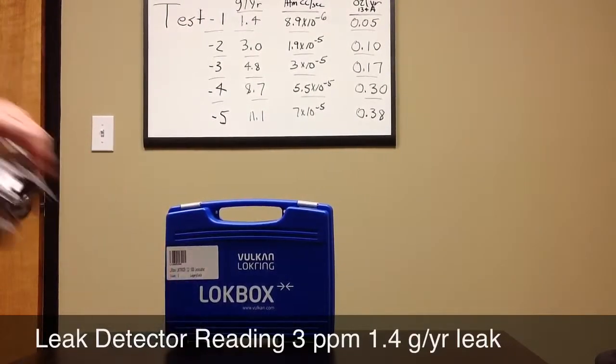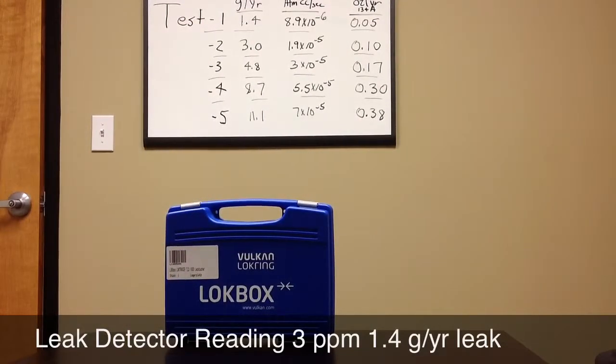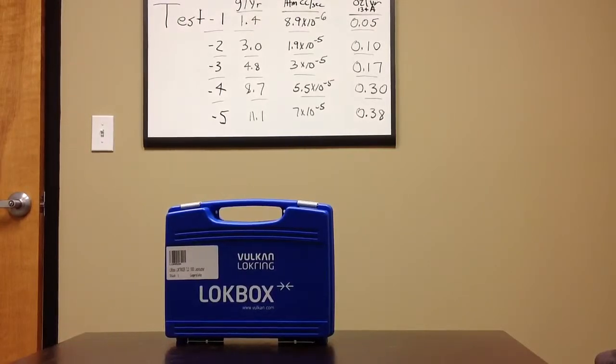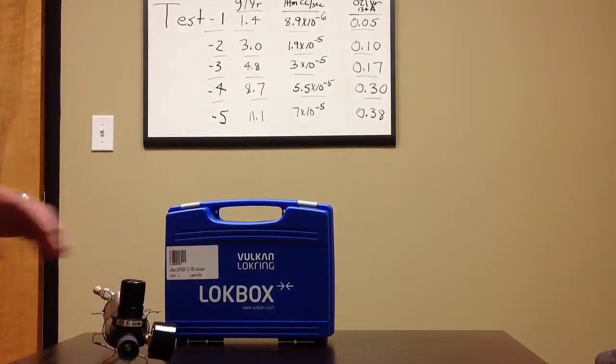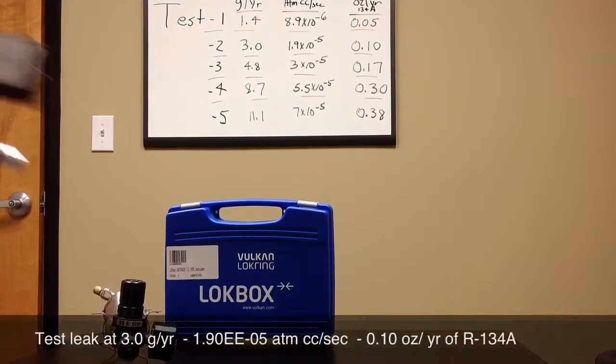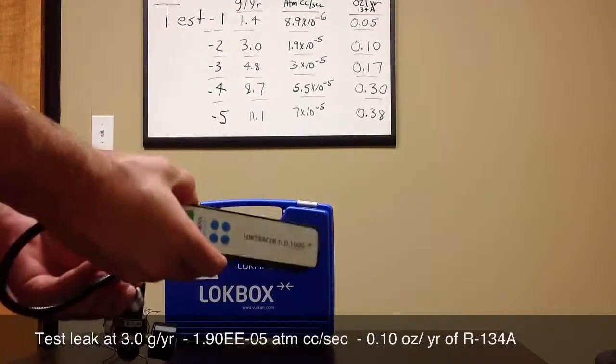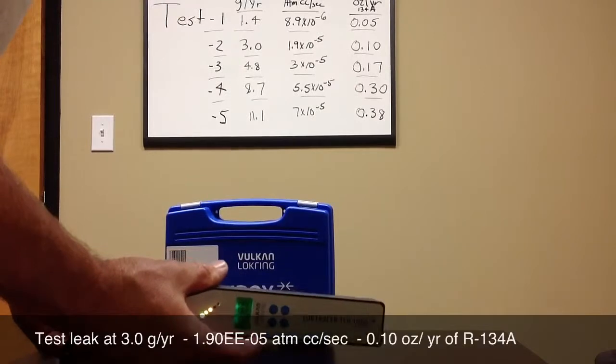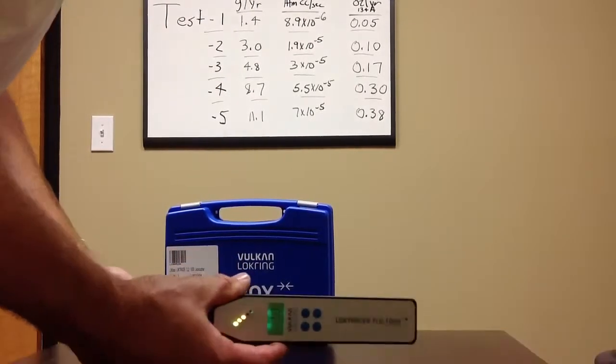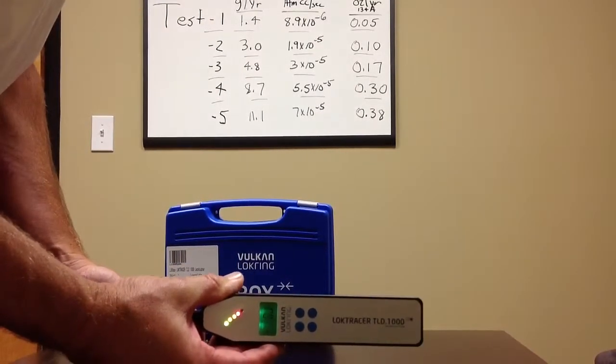I'll now change the leak up the flow to the 3.0 grams per annum and we'll do the next test. This is test number 2. Stronger signal this time.